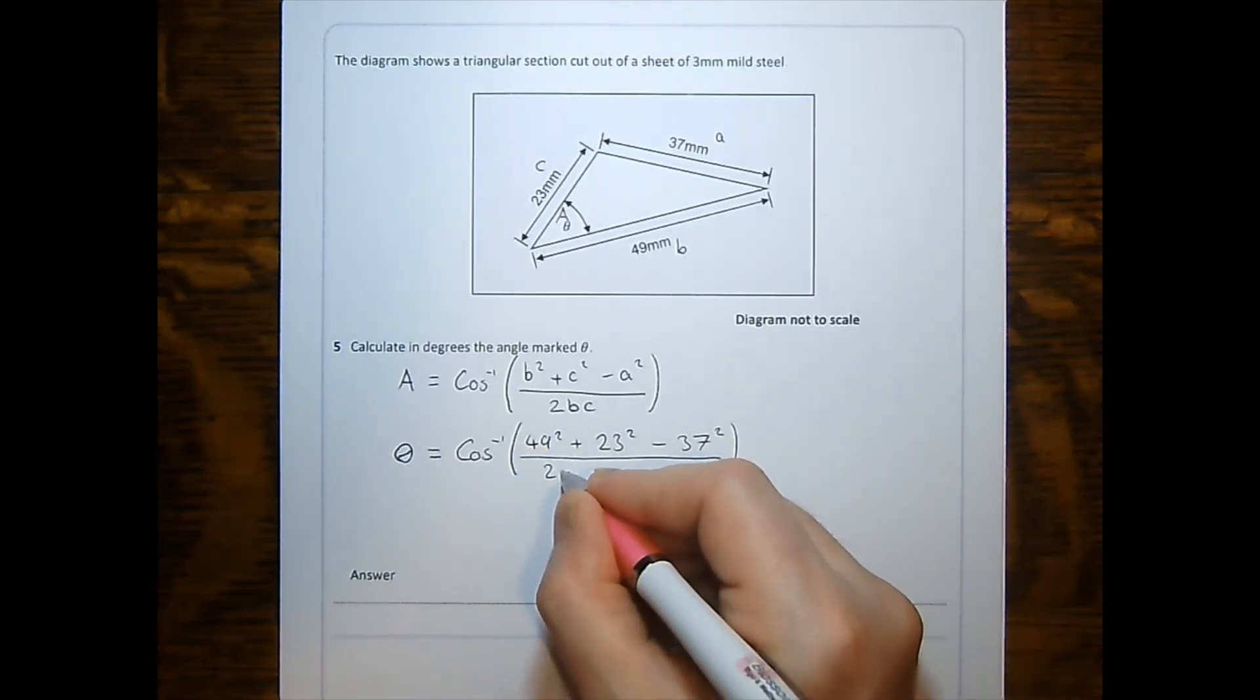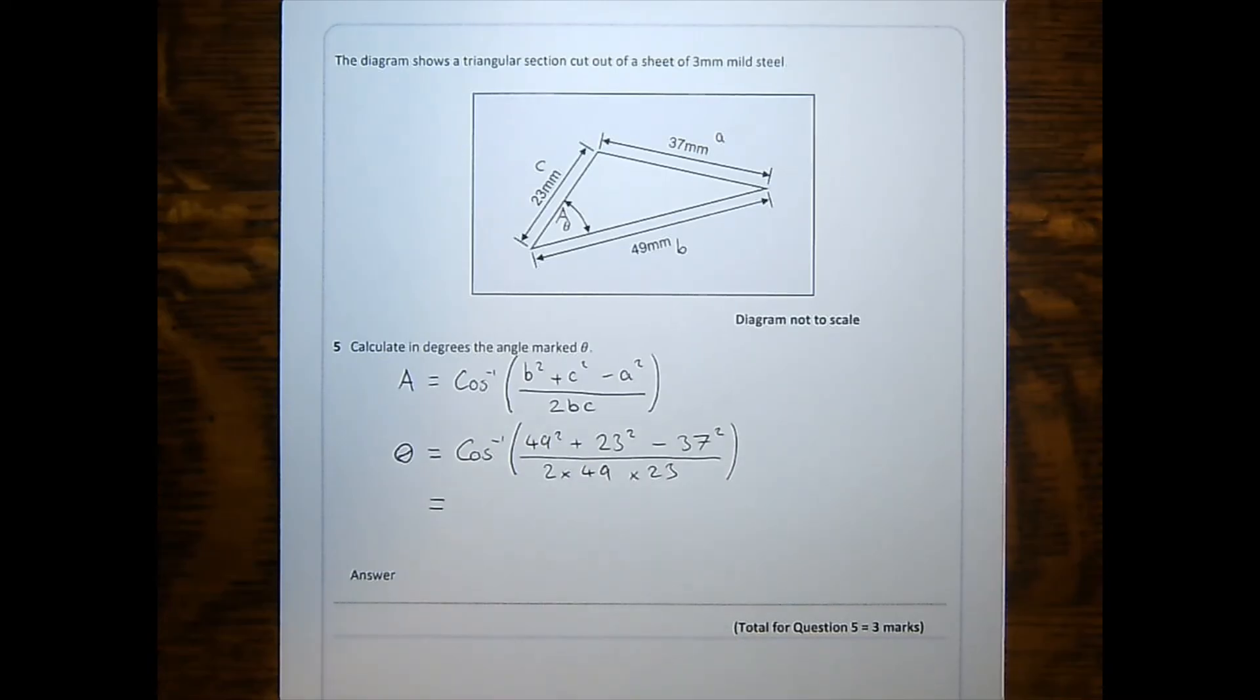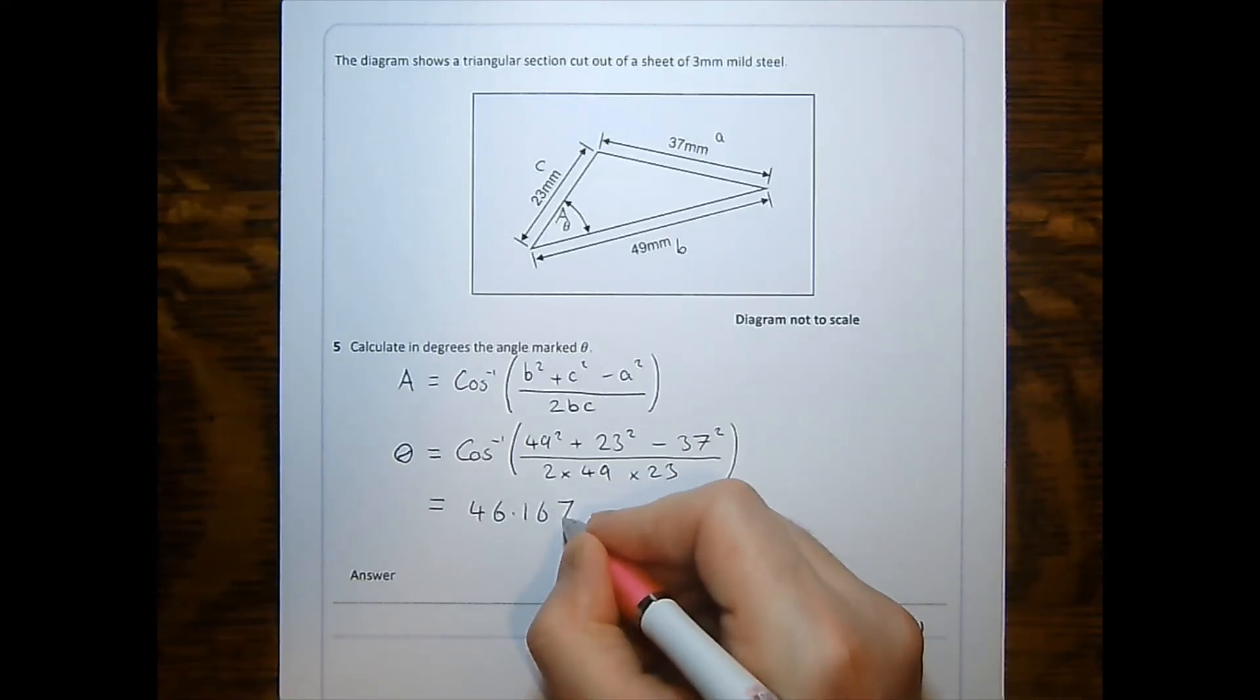Two times 49 times 23 for 2bc. Putting all of that into our calculator, I get 46.167 etc.